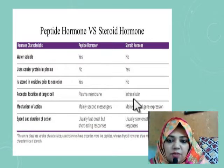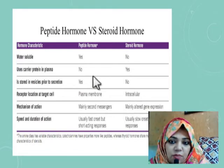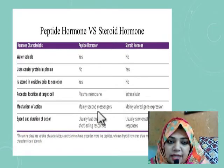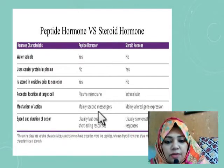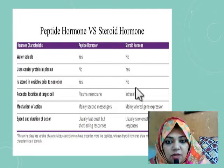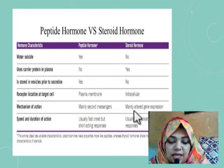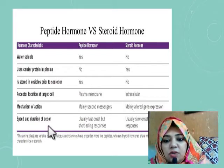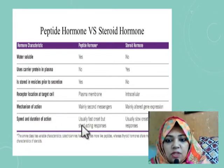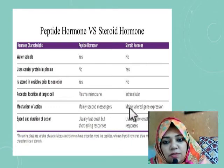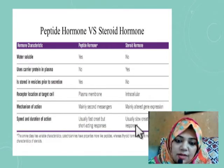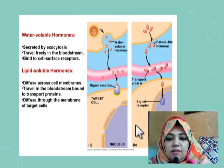Receptors for protein hormones are located on the plasma membrane; receptors for steroid hormones are intracellular — located in the cytoplasm. The mechanism of action of protein hormones is mainly by second messengers, activating a cascade of reactions; the mechanism of action of steroid hormones is mainly by gene activation. Onset and duration of action: protein hormones have a fast onset but are short acting; steroid hormones have a slow onset but a longer duration of response.